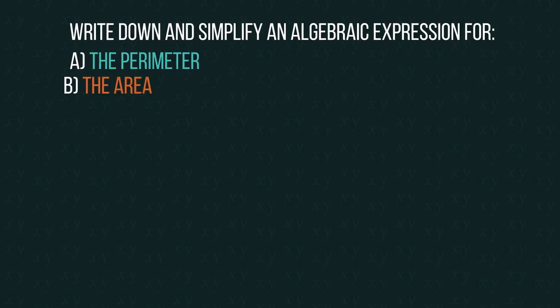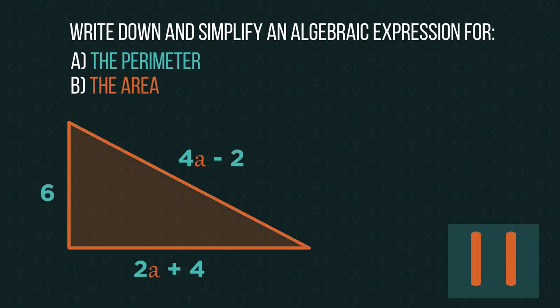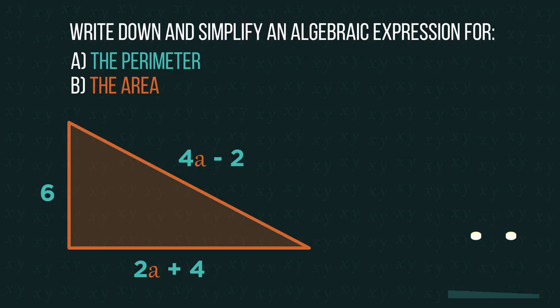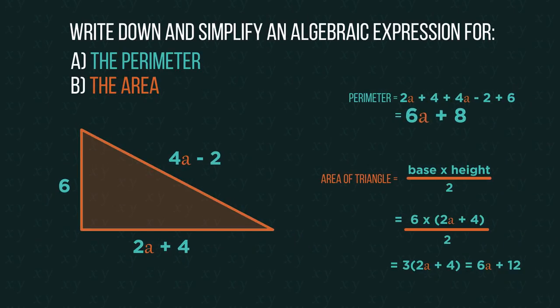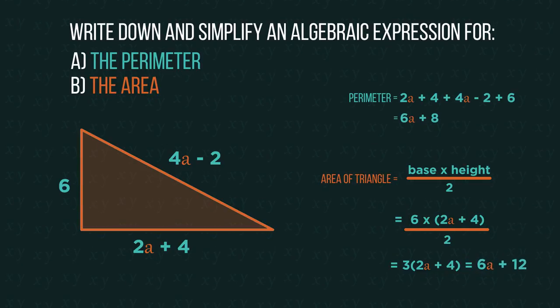So how about this question? Pause the video and give them a go. Did you simplify the perimeter fully to 6a plus 8 and the area to 6a plus 12?